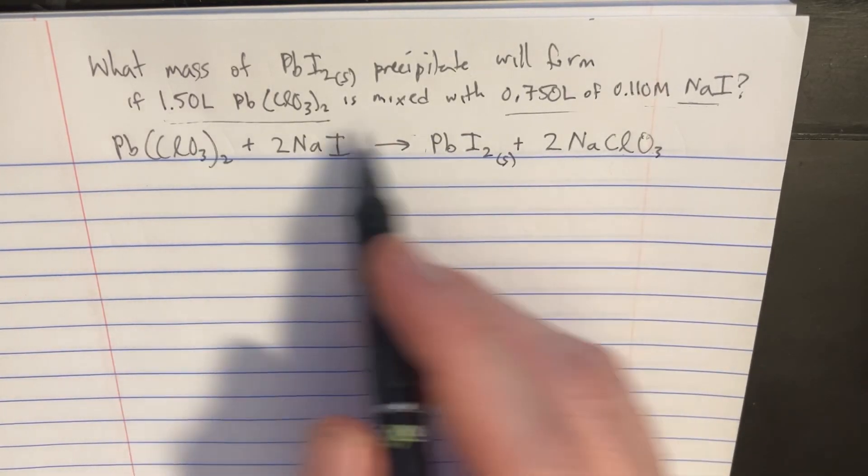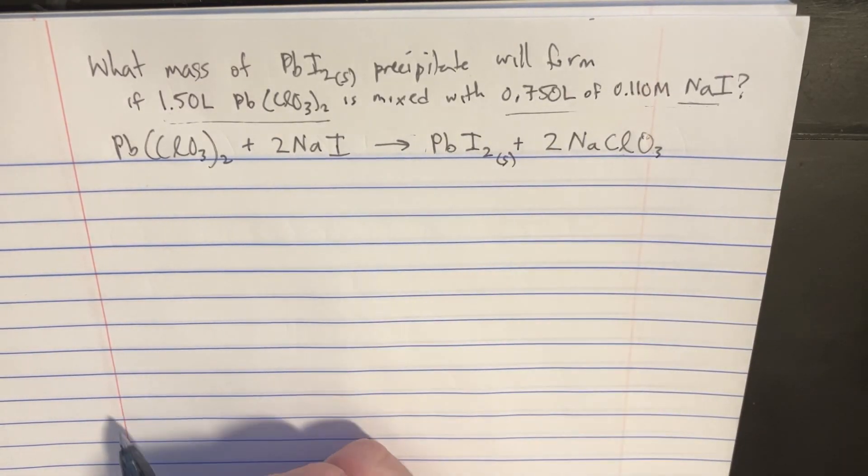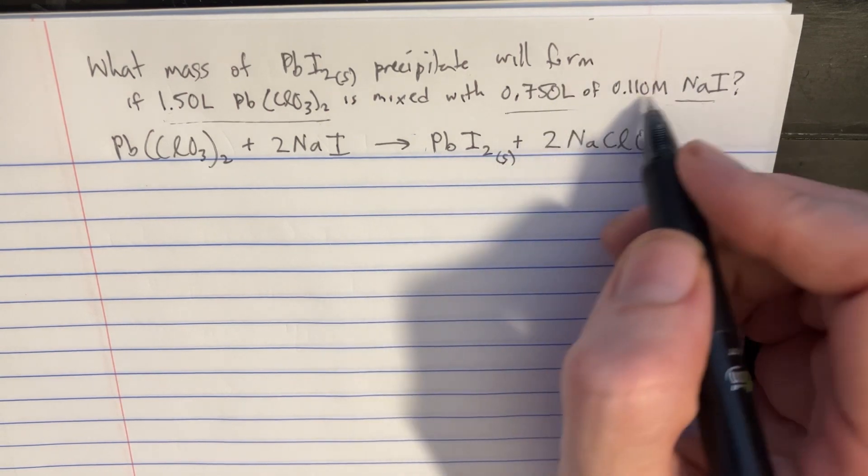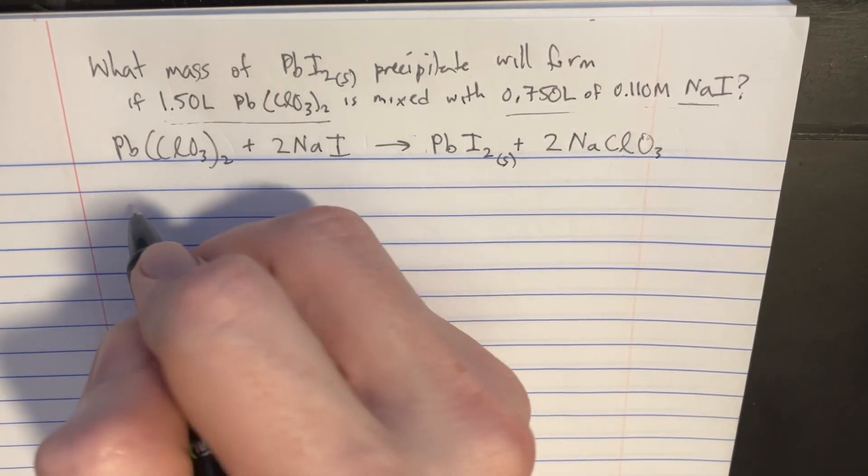We're trying to find the mass of the precipitate that will form if we mix some of these compounds together. Now we're given the molarity of NaI, so let's start with that.